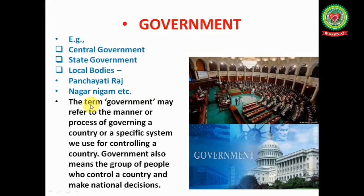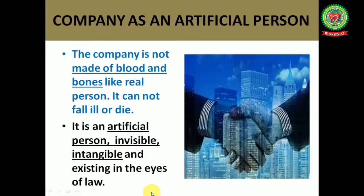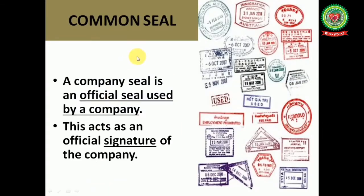The term government may refer to the manner or process of governing a country, or a specific system used for controlling the country. Government also means the group of people who control a country and make national decisions. Next is company as an artificial person — a company is not made of blood or bones like a real person; it cannot fall ill or die. It is an artificial person: invisible, intangible, and existing in the eyes of law.